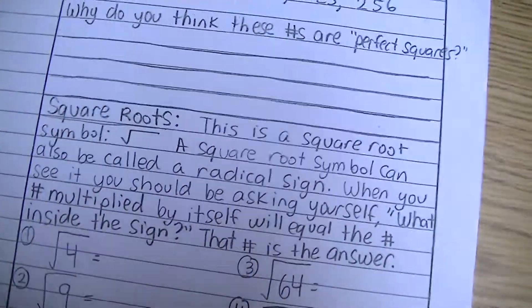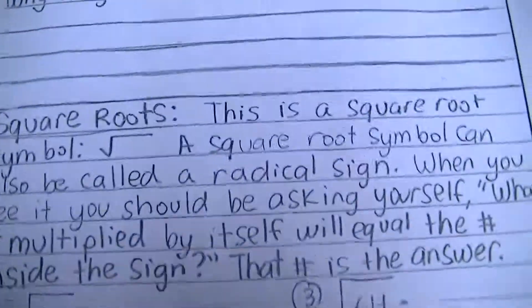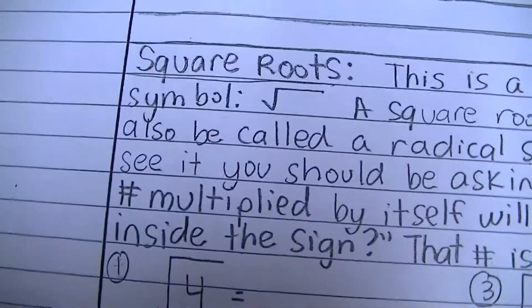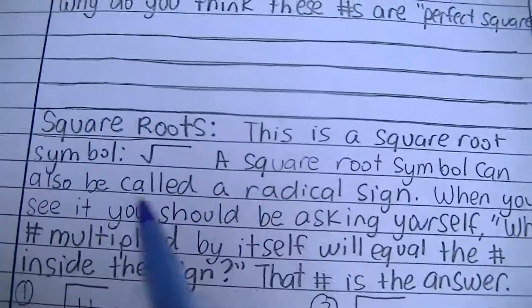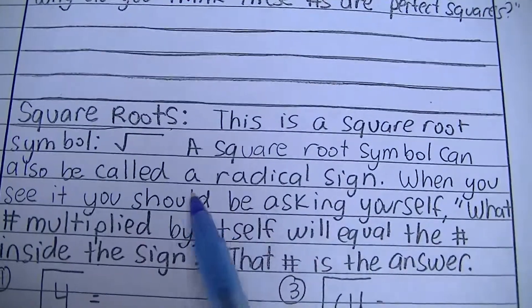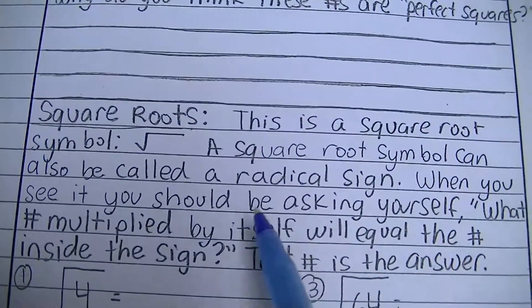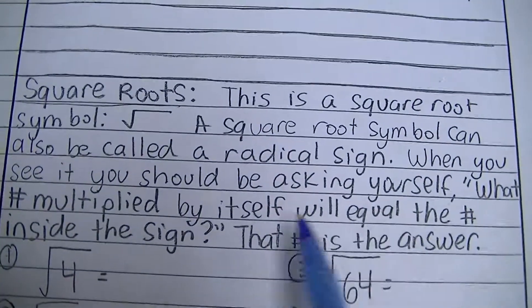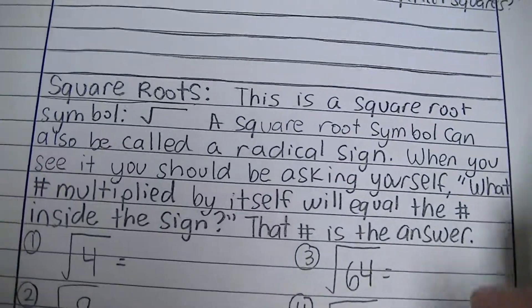Now comes the part about square roots. This is a square root symbol — it looks like this. They're also called radical symbols, or a radical sign. When you see it, you should be asking yourself: what number multiplied by itself will equal the number inside the sign?